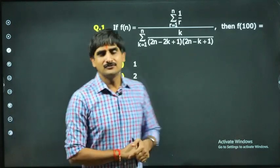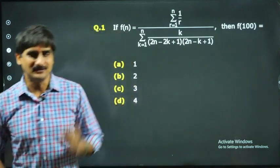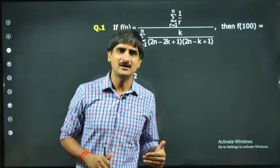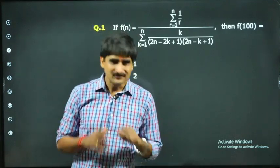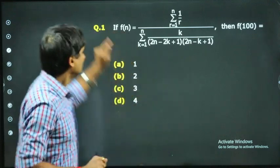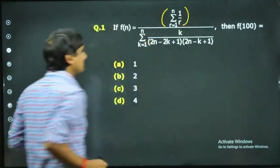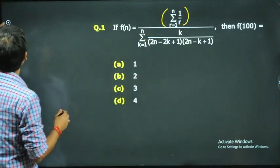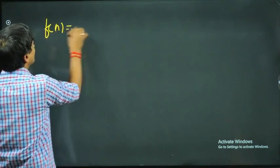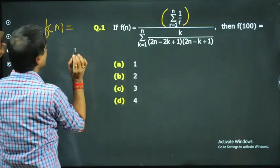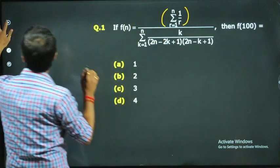Whenever I have to solve a question and I can't apply any direct result, formula, or method, the one thing I try is to open the summation. I'm saying that because of this thing in the numerator. Looking at the numerator, let's say f(n) — for the numerator, it simply starts with r = 1 going till n.